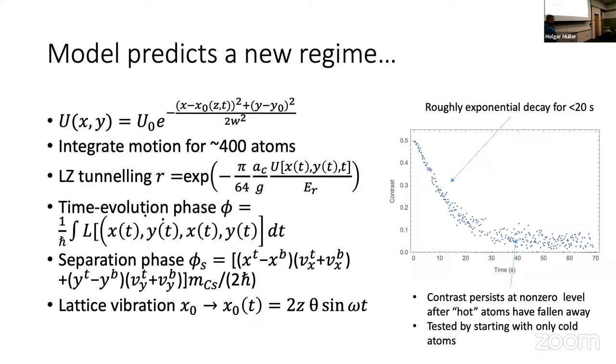So after Sisyphus cooling, we have Raman sideband cooling that should get us to 400 nanokelvin. But in practice, it's more like 500 or 600. In the vertical direction, we do a velocity cut, reducing it to 50 or something like that. But transversally, it's still the 400 or 500. Okay. But now we wanted to see this.